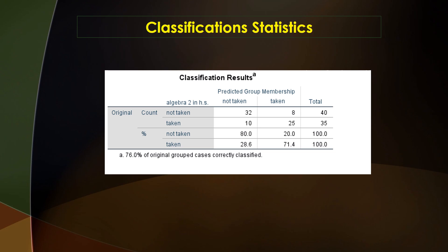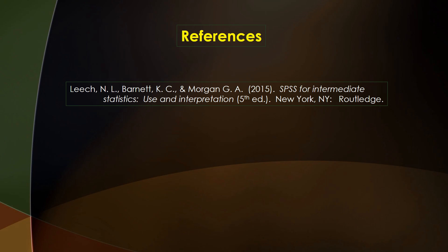This last table shows that the discriminant analysis correctly predicts 80% of those who did not take Algebra 2 and roughly 71% of those who did. Overall, 76% of the sample was classified correctly. The following slide is a list of references that I've used. I hope this presentation has been clear — thank you for watching.